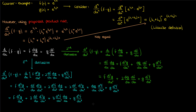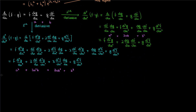Let's analyze these successive derivatives. The first derivative of the product looks just like a plus b; the second derivative looks like a plus b squared, which is a squared plus 2ab plus b squared; and the third derivative looks like a plus b cubed. Recognizing this pattern allows us to write a general rule using the binomial theorem, which states that a plus b to the power n equals the summation from k equals 0 to n of n choose k times a to the n minus k times b to the k.